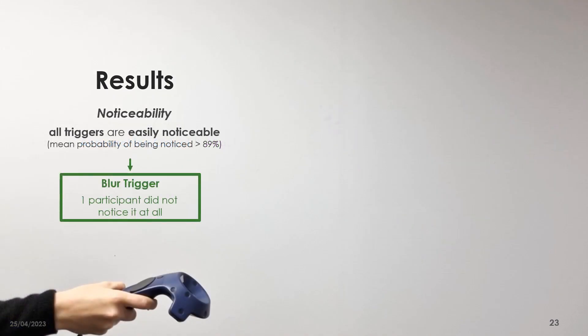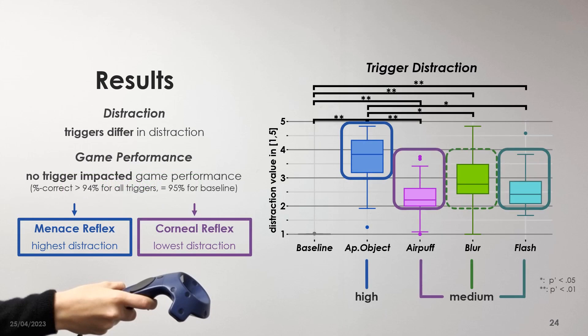Since our initial goal was to develop unnoticeable triggers, we also looked at the results on noticeability. Here, however, we conclude that when configured to be effective, all our triggers were easily noticeable. As a consequence, it seems important to consider how obtrusive triggers are perceived. We found the triggers to differ in distraction, with the most effective approaching object trigger being perceived also as most distracting, and all other triggers to be perceived as significantly less distracting. The participant's performance in the game task was not found to be impacted by any trigger.